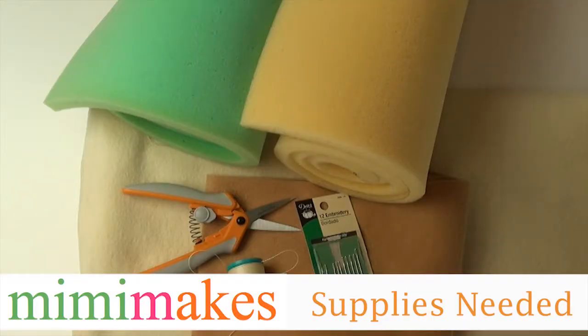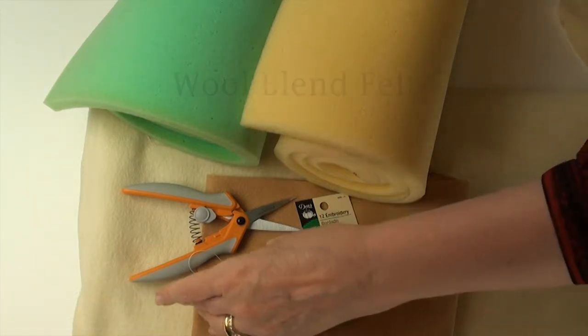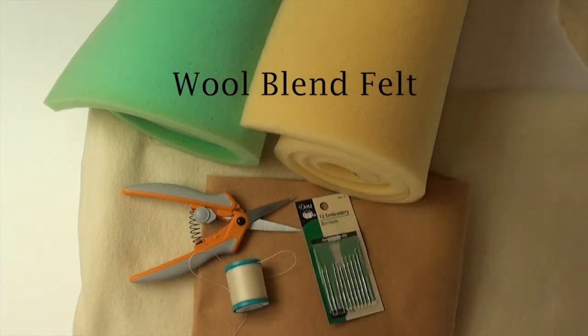To make this slice of play bread you will need some camel and some cream colored felt. Be sure you get wool blend felt. 100% wool felt is very expensive and wool blend felt actually works better. By the same token, in craft stores you can find felt that has no wool in it at all and that's difficult to work with and doesn't hold up well. So wool blend is the way to go.